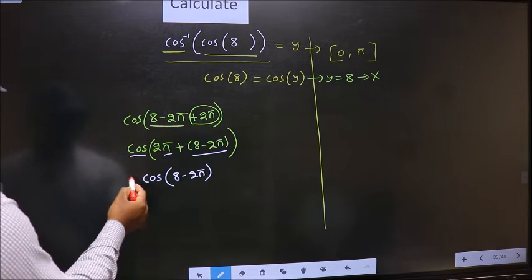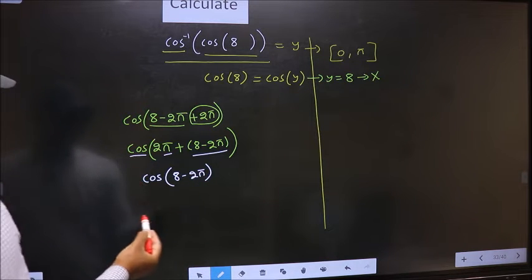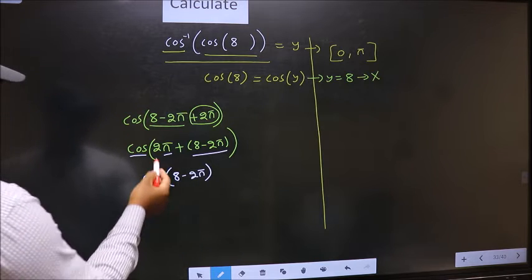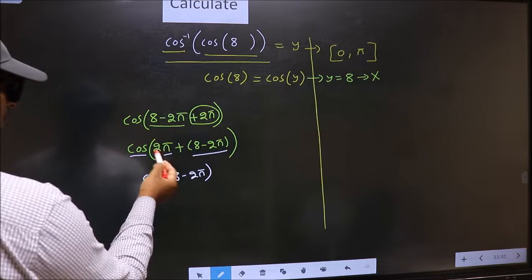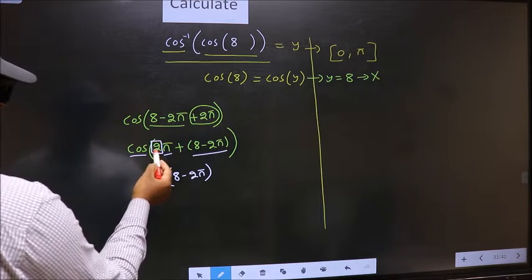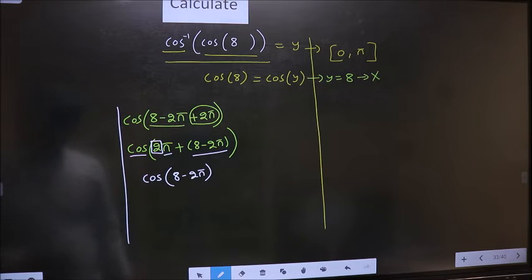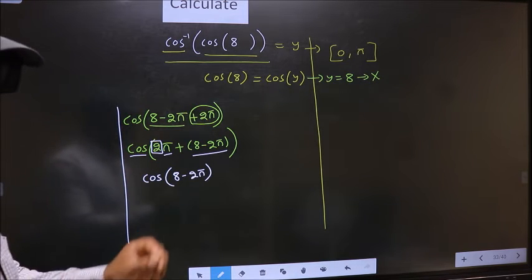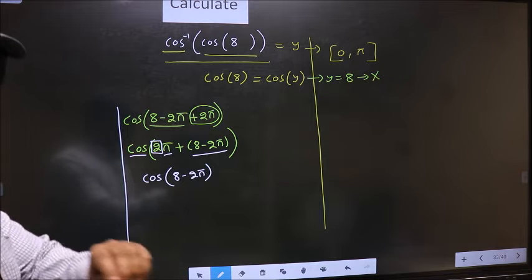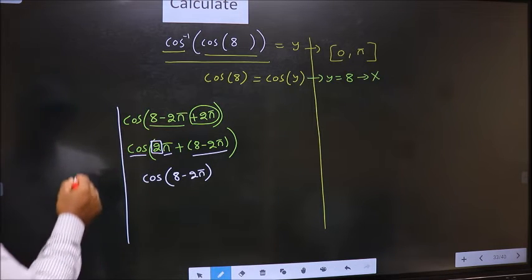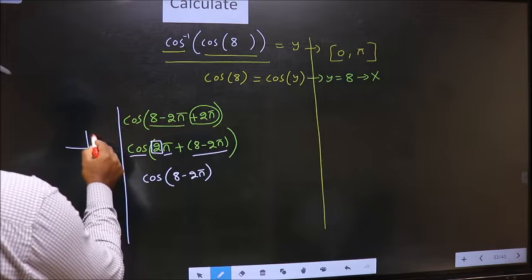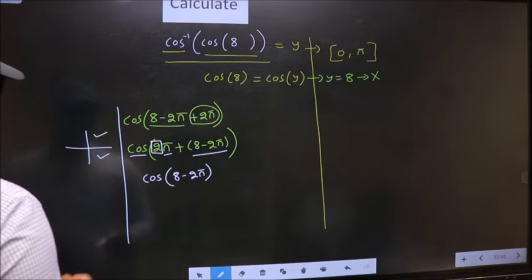Now the question is, will we get here plus or minus. To answer that, we should look at the number before π, which is 2. And 2 is even. And all the even multiples of π, they lie in either in the first or in the fourth quadrant.